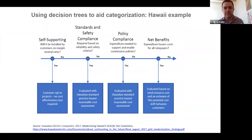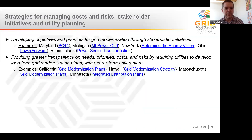This is an image from a decision-making tree that can help in the process of categorizing and thinking through how to evaluate different investments. The slides are available so you can read through this at your own pace. This presentation includes several examples of state strategies consistent with the framework we've put together in the guidebook for managing costs and risk.